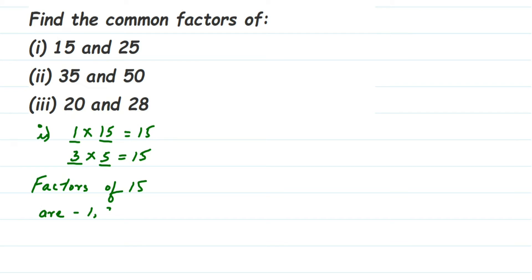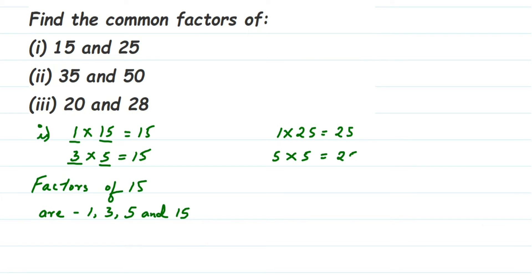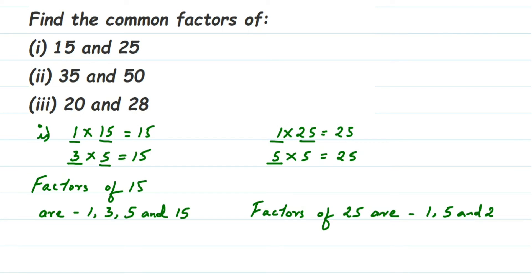Now similarly, let's find the factors of 25. 1 × 25 = 25. It doesn't go in the 2, 3, or 4 table. It goes in the 5 table directly: 5 × 5 = 25. Checking from 6, 7, 8, 9, 10 — it doesn't go in any other table. So the factors of 25 are: 1, 5, and 25. Note that 5 appears only once even though 5 × 5 = 25.